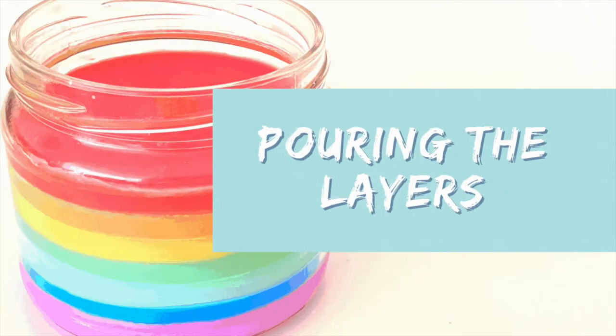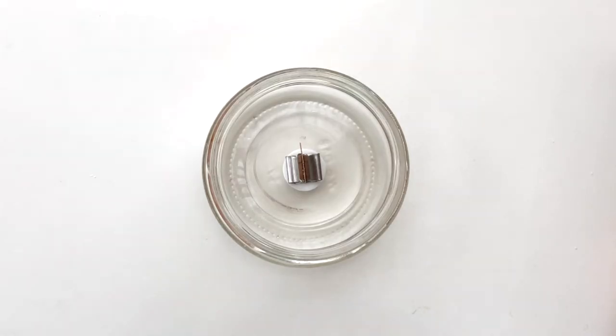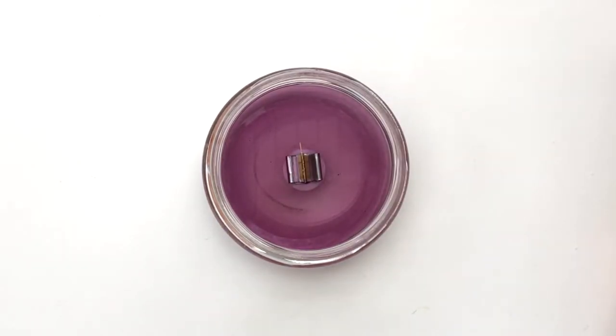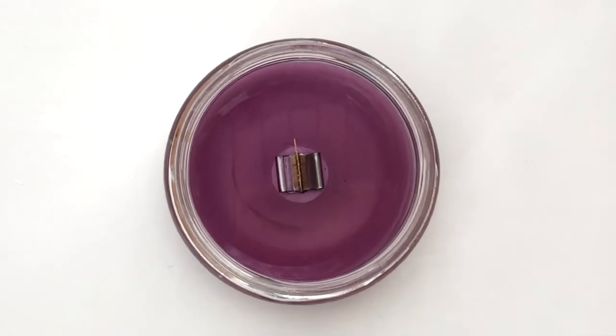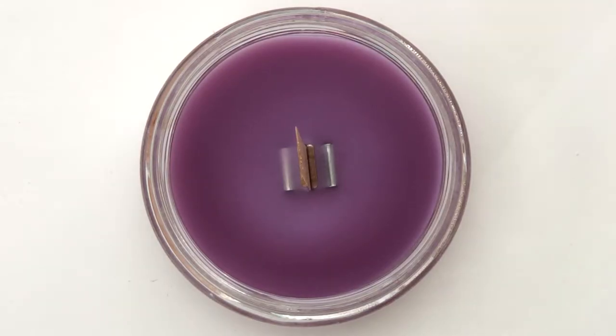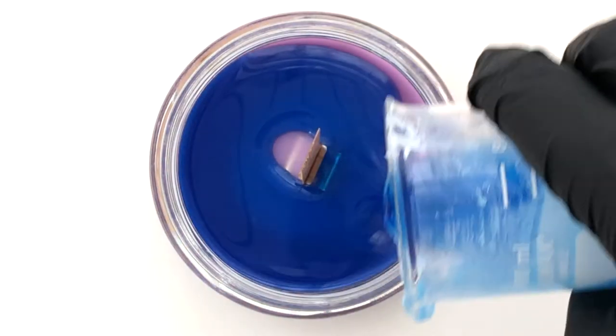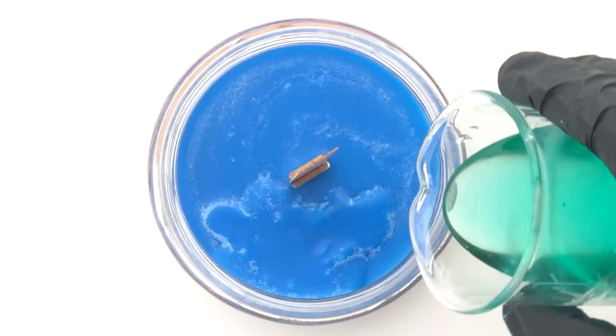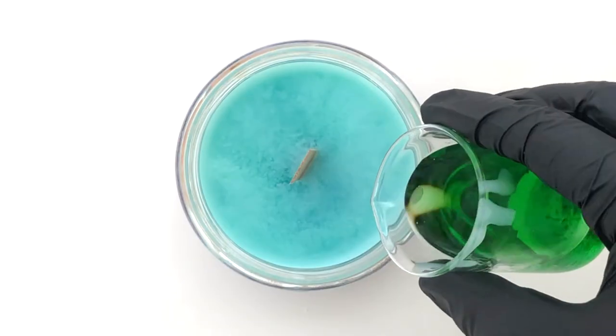Now, all that remains is to pour the layers. We pour the first color, purple, and let it solidify slowly. When it is solidified, pour the second color, the blue, and wait for it to cool. Once solid is the time to pour the light blue, followed by green.